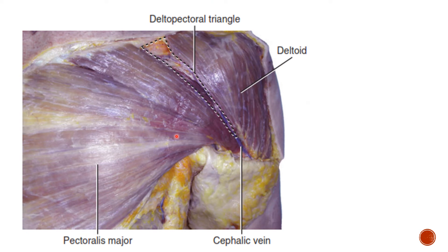Let me show you these two muscles again: pectoralis major and the deltoid. Medially you can identify the pectoralis major, and laterally you can identify the anterior fibers of deltoid. And here is the base and here is the apex.